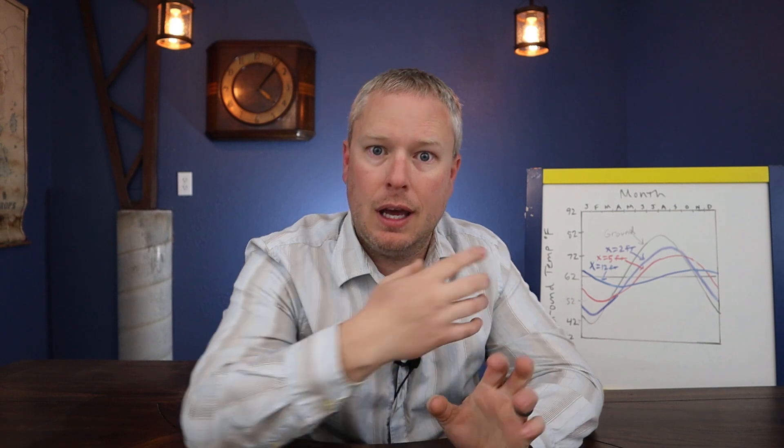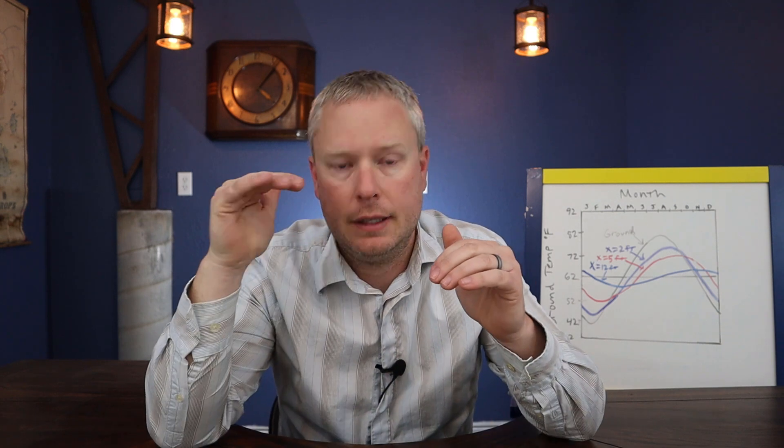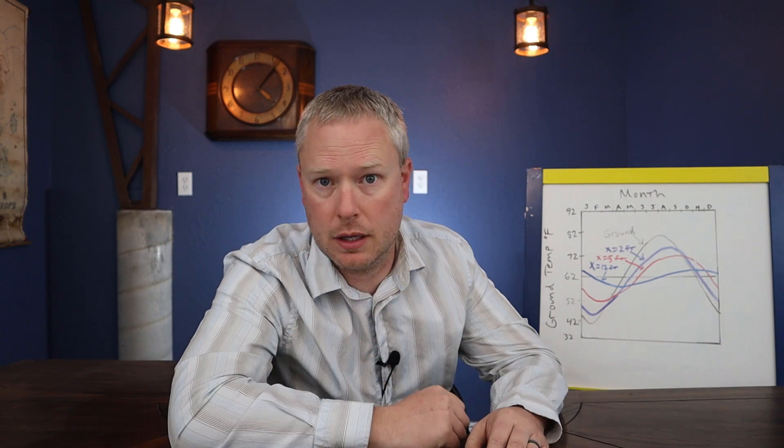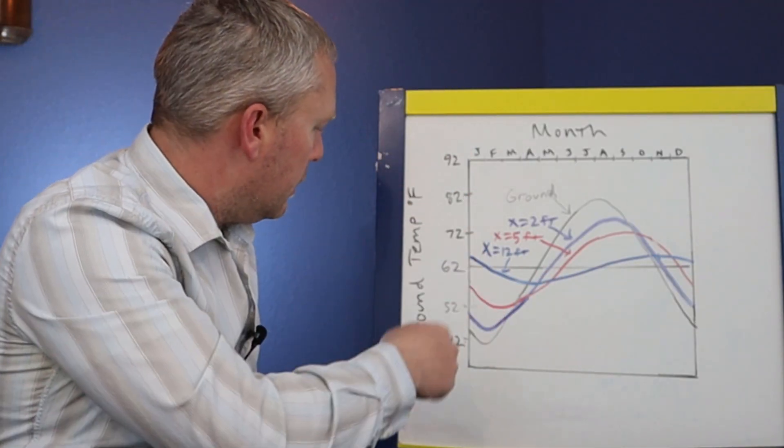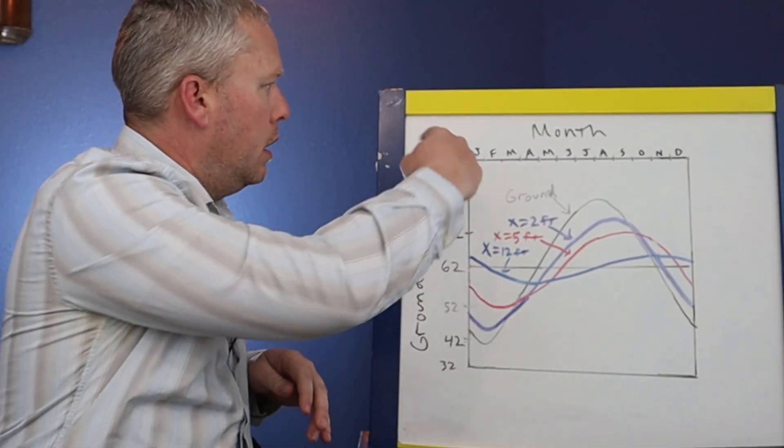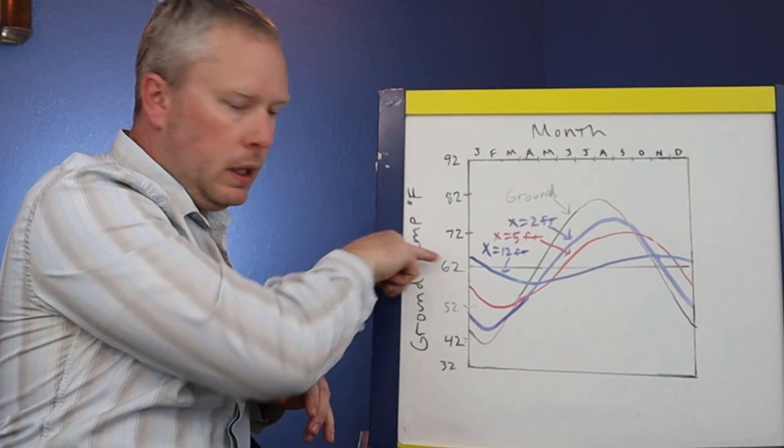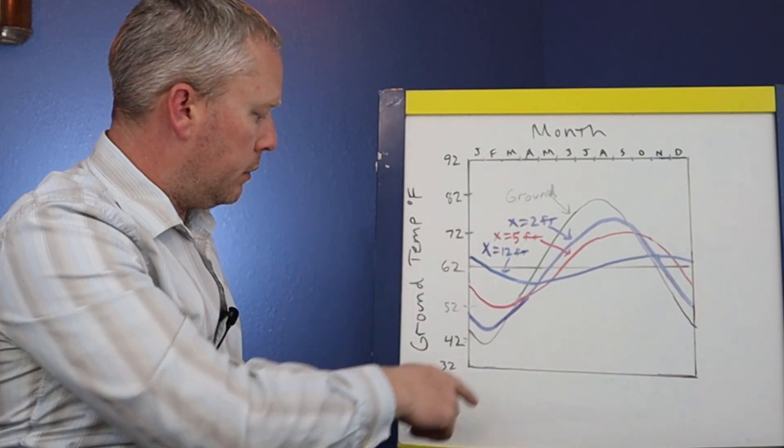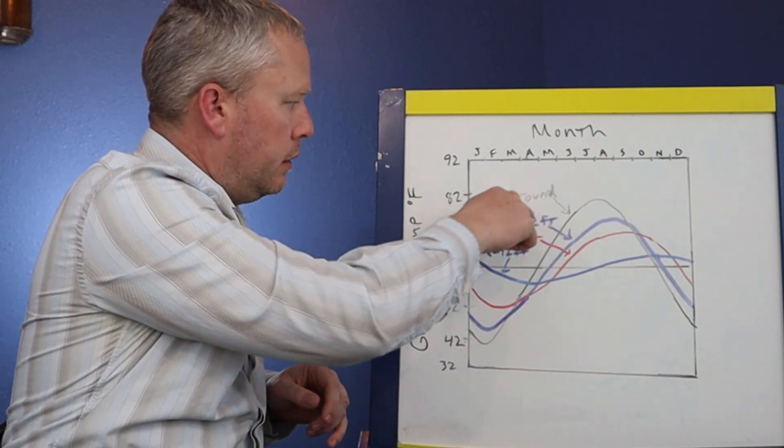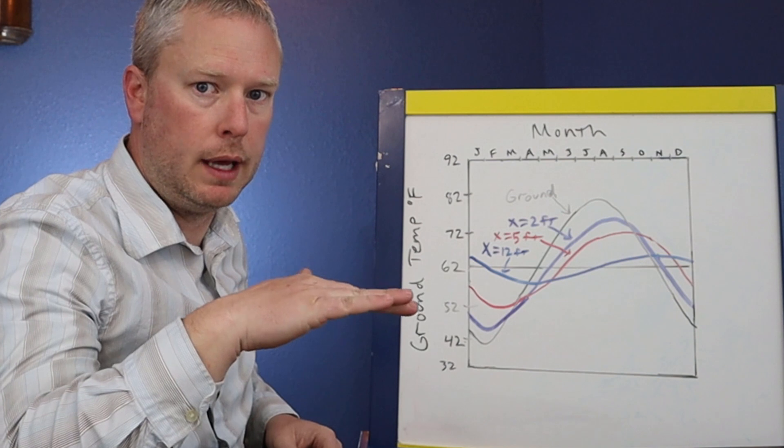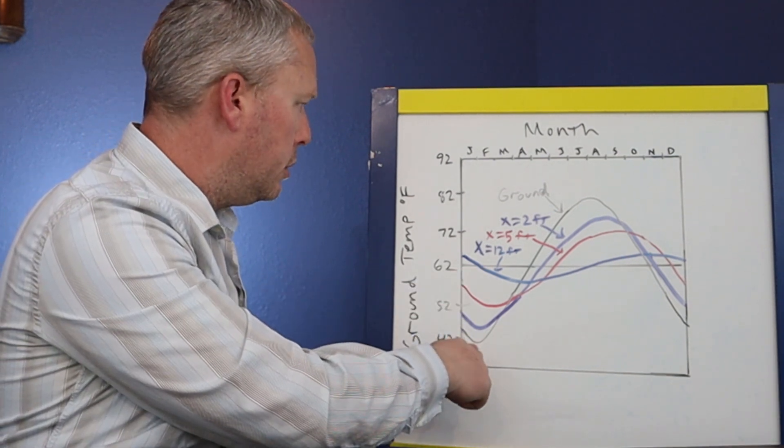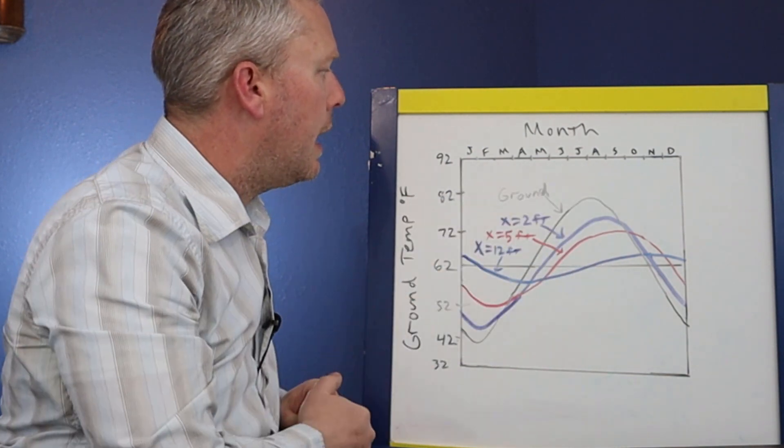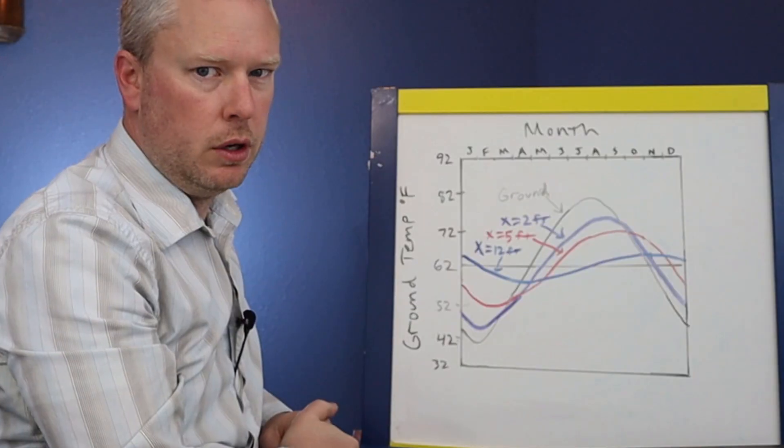So I made this graph right over here to show you the differences of temperature at depth. On the side here, we've got the ground temperature, and then we have the months. We're going to assume that the area we are in is 62 degrees, and that's this black line going all the way across. This black curve here is the ground temperature at ground level. You'll notice it hits its low temperature around January, February—really beginning of February—and then hits its high temperature in August, usually early August.